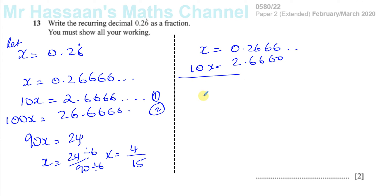Now, when you subtract these, some people subtract like this, this will be 9x is equal to, you'll have 2.4, and all the 6s after that will disappear.